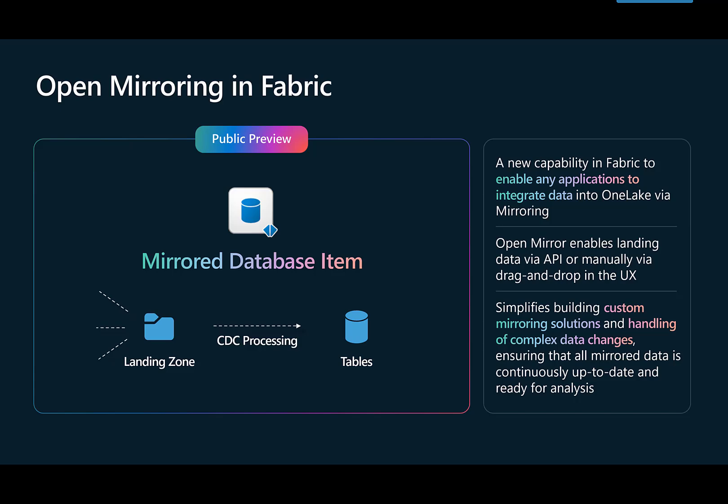There's a little caveat because you have to do the work to get it from the source, but once you've got all the changes and data from the source, you put it into a landing zone and then mirroring does the rest. It turns into Delta, you can then query it, you can do reports, and you can share it to everyone in Fabric. So let's jump into that in a little bit more detail.